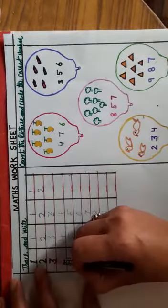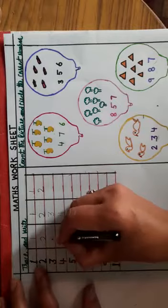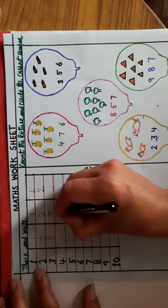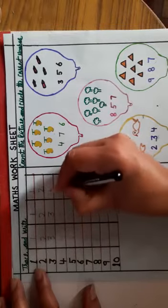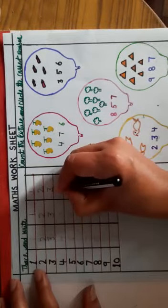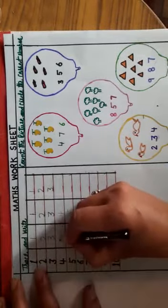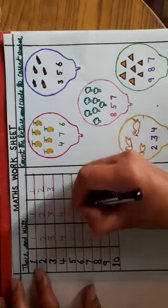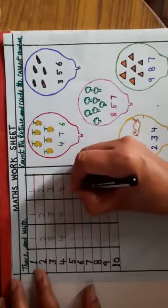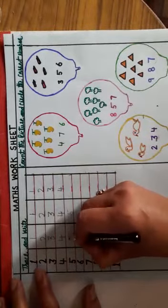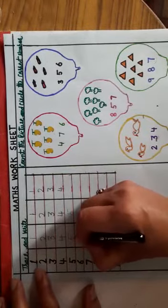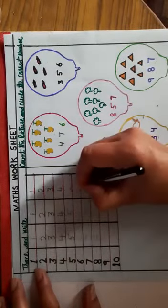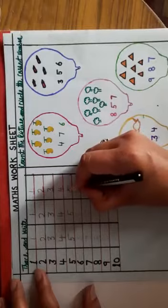Now next is number 3. This is number 3. Next number is 4. 4. 4. Next number. Number 5. 5. This is number 5.